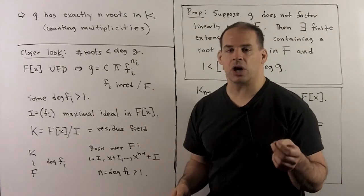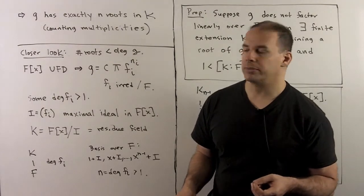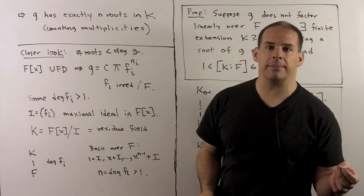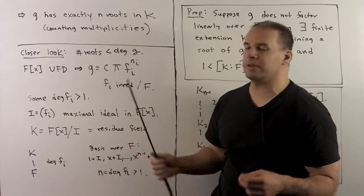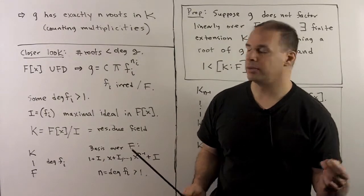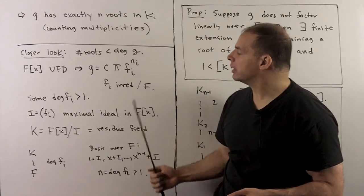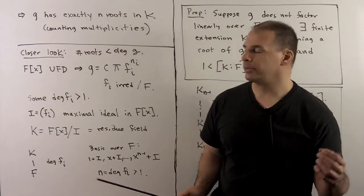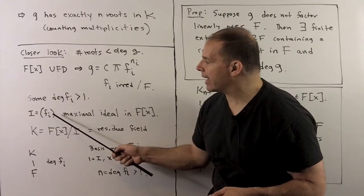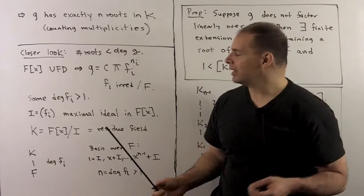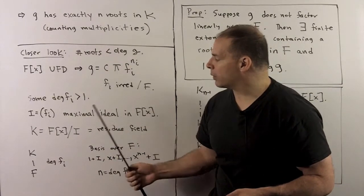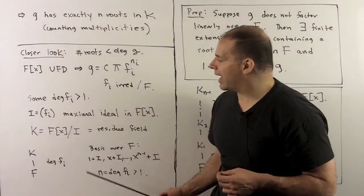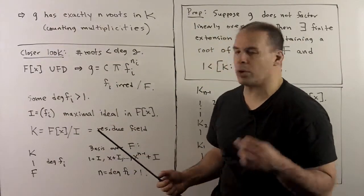Let's take a closer look at the construction when g does not factor linearly over f. The polynomial ring over f is a unique factorization domain, so g factors completely into a product of irreducible polynomials over f. If this factorization is not completely linear, then the degree of one of the factors, say f_i, is strictly bigger than one. We form the ideal generated by f_i. Because f_i is irreducible, this is a maximal ideal. Forming the quotient ring gives a field, and f sits inside this field as the span of the coset 1 + I.